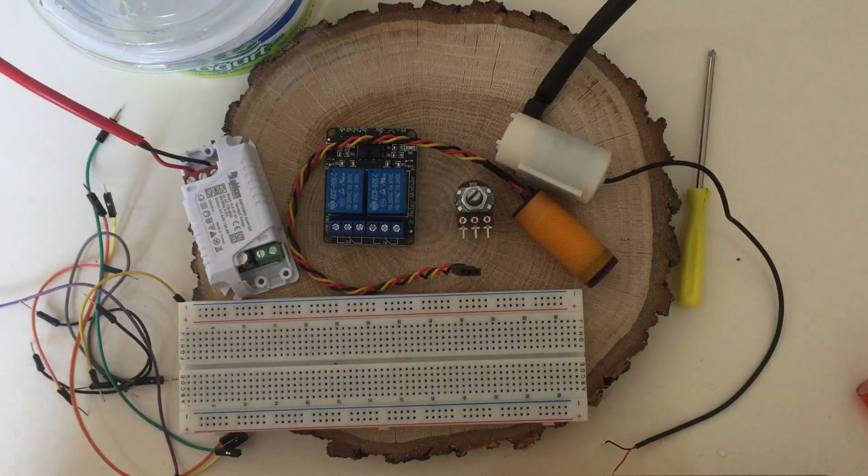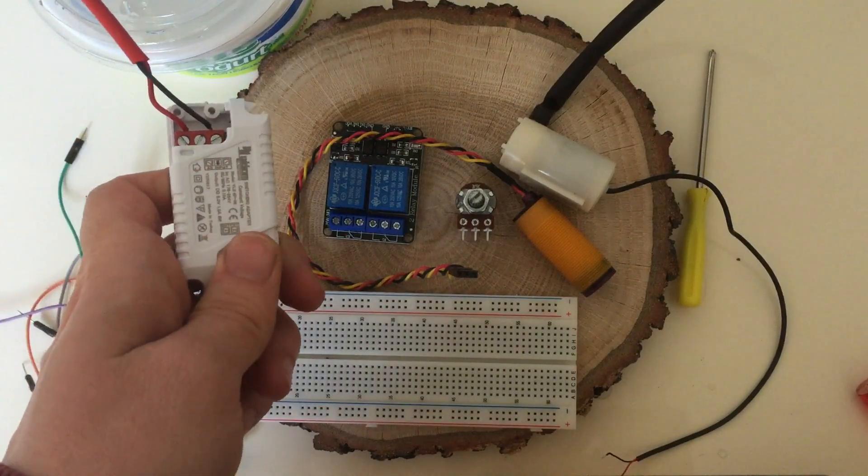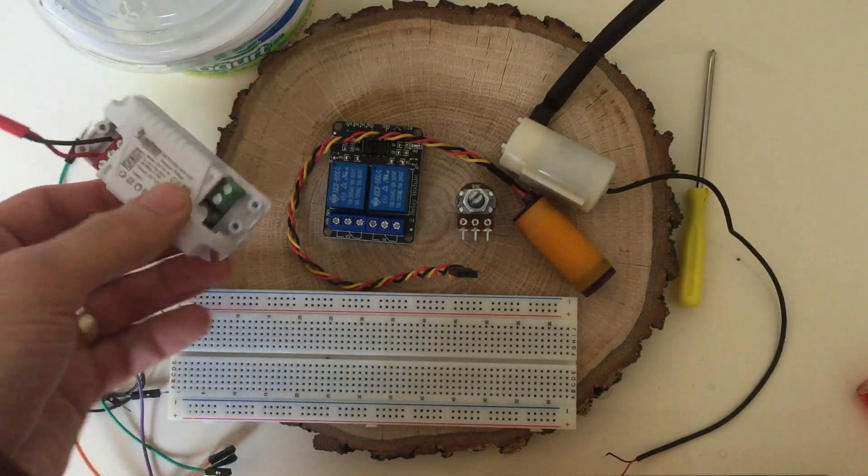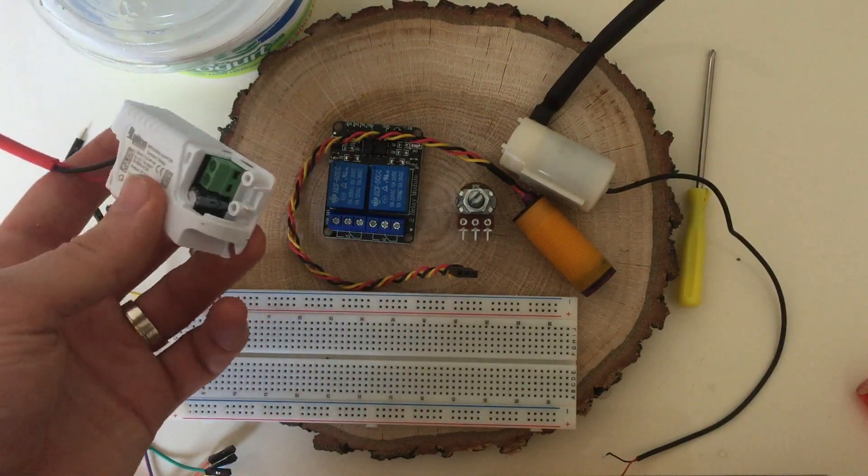We are going to need a few easy to find components. First one is a 5V adapter. It can be a wall wart type too but I had this readily and because it has secure terminals on it, it's going to make my job easier.